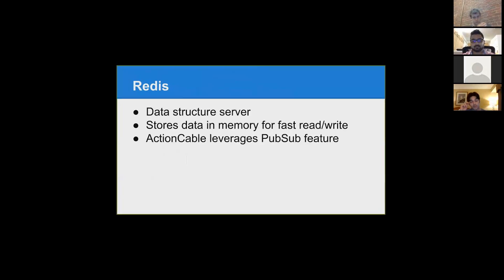Redis is going to serve as a middleman — it's a data structure server that caches everything in memory, so you have a very fast read-write response time. Action Cable actually leverages the PubSub feature in Redis, which is the publish and subscribe feature.